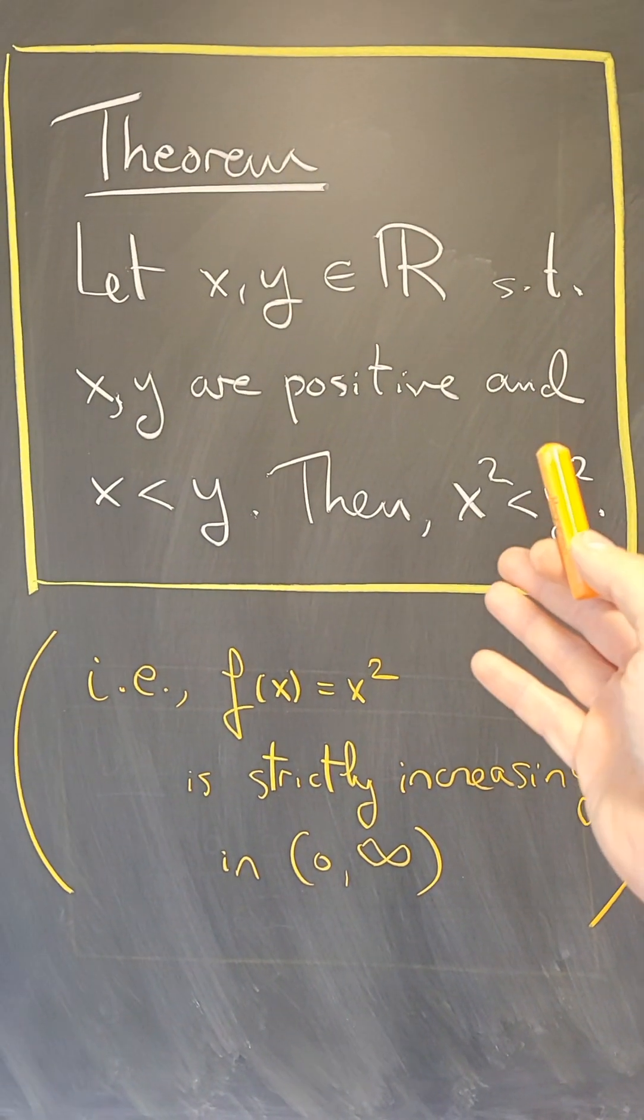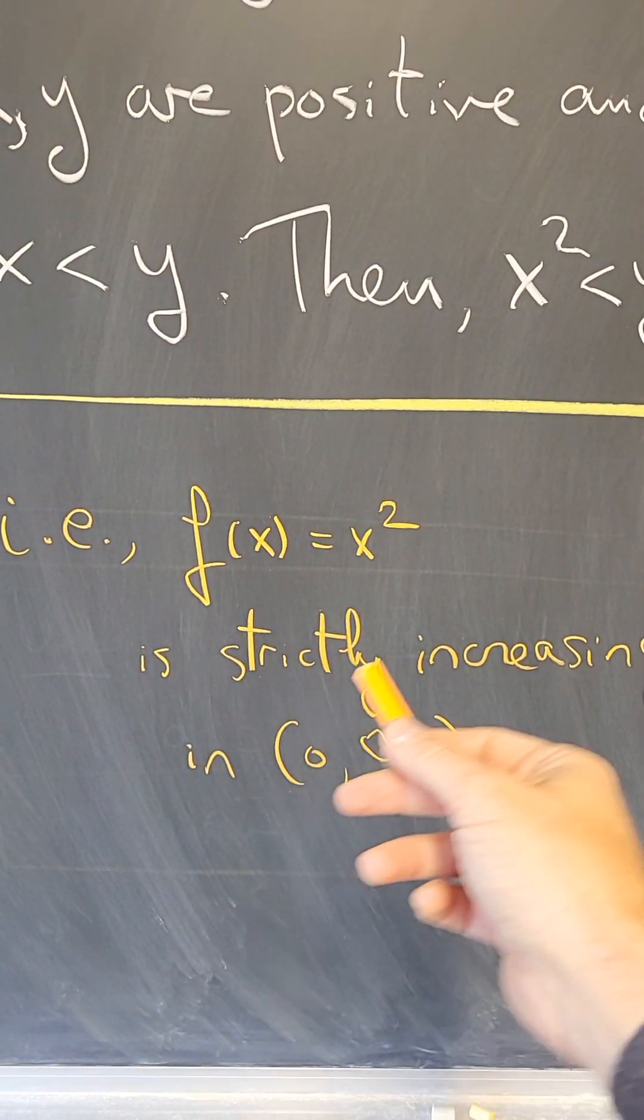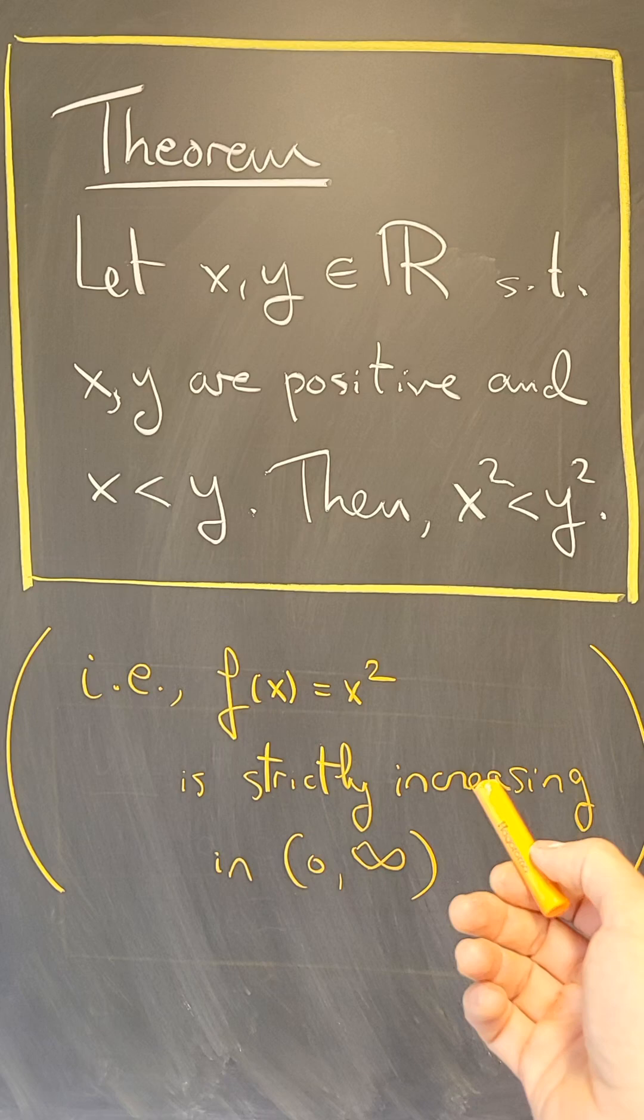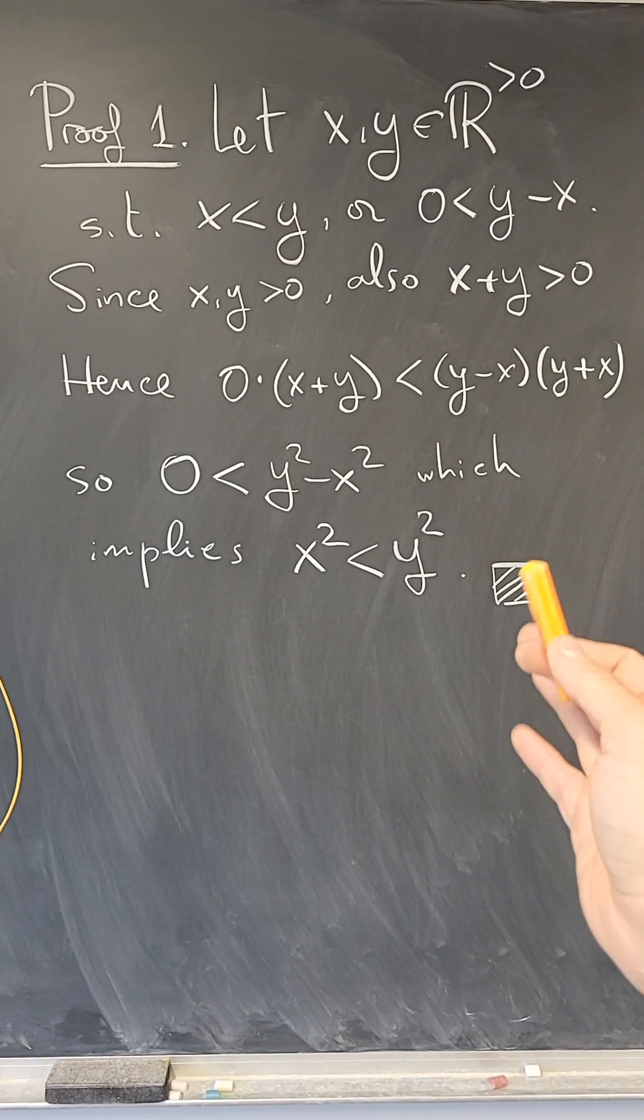So what this is actually saying is that the function f(x) = x² is strictly increasing in the interval from zero to infinity for the positive real numbers. I am going to give two proofs of this fact, so here is one.